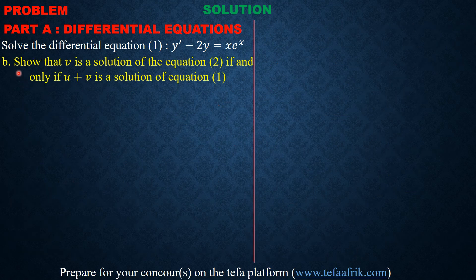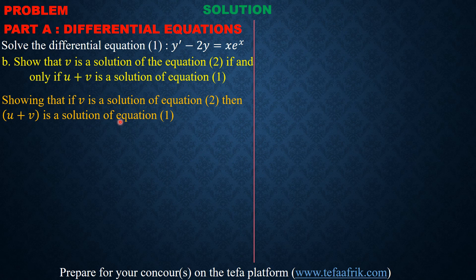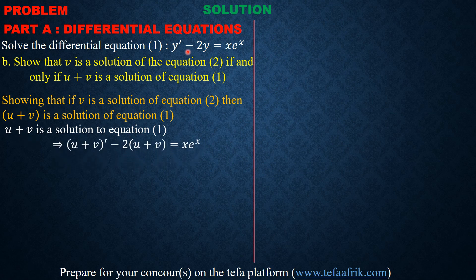The next part asks us to show that v is a solution of equation 2 if and only if u plus v is a solution of equation 1. This is a double implication. We first show: if v is a solution of equation 2, then u plus v is a solution of equation 1. For u plus v to be a solution of equation 1, we replace y with u plus v and verify the equation holds.